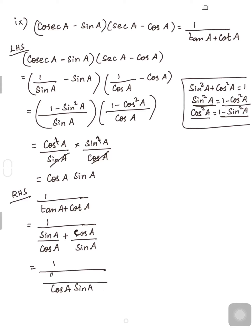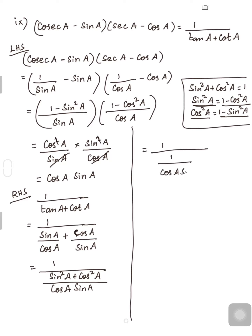sin²A + cos²A = 1, so the denominator of the compound fraction becomes 1/(cosA·sinA). Therefore 1 divided by 1/(cosA·sinA) equals cosA·sinA. So LHS is also cosA·sinA and RHS is also cosA·sinA. We have proved LHS is equal to RHS. Are you clear, children?